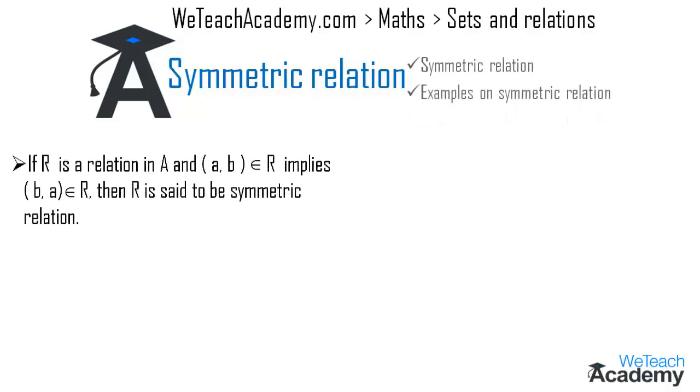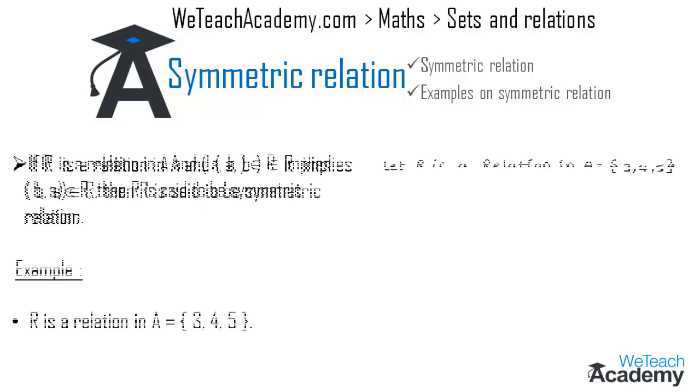If R is a relation in A and (a, b) ∈ R implies (b, a) ∈ R, then R is said to be a symmetric relation. Now let me explain this concept with the help of an example.